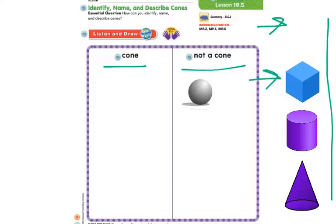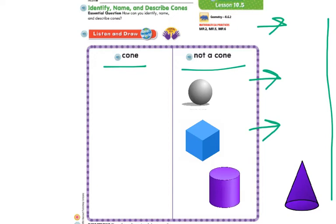The next one, what shape is this? This is a cube. We see flat surfaces, but we don't see a curve like the cone does. What is this shape? This is our cylinder. It does have a curve like the cone does, but the cone has that special point at the top, not the cylinder. So we're going to put this on not a cone side.